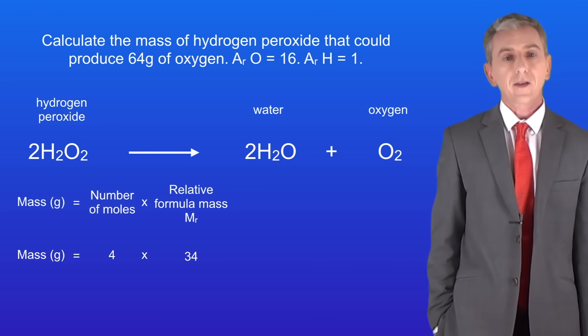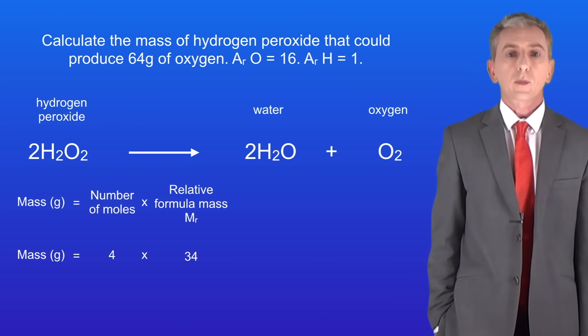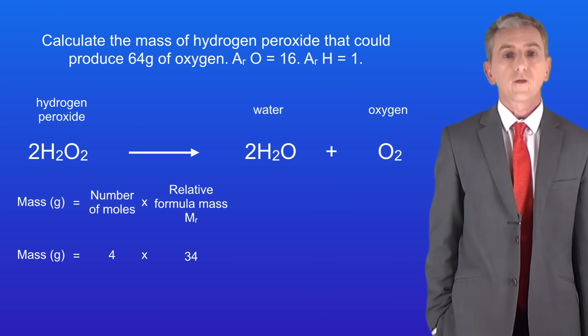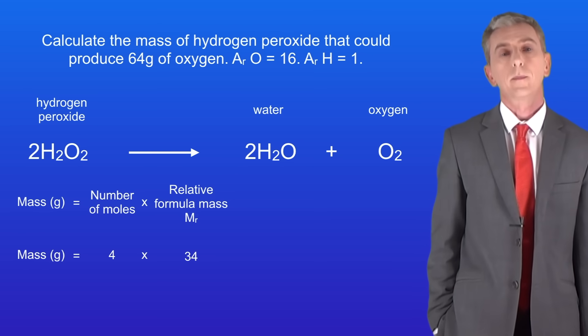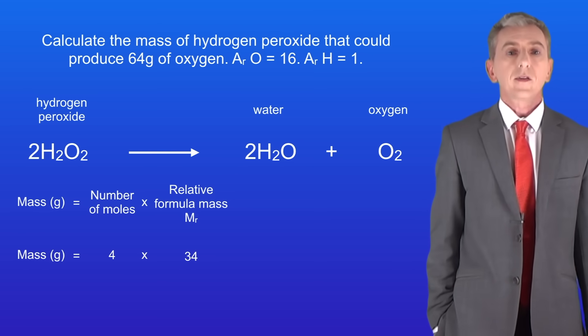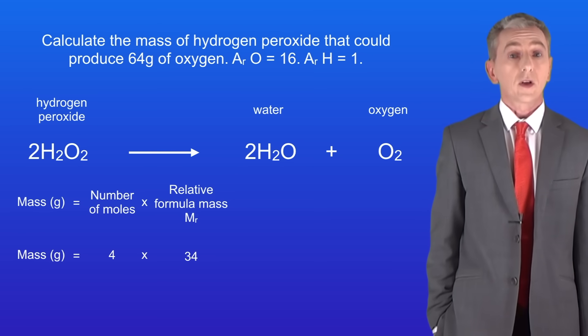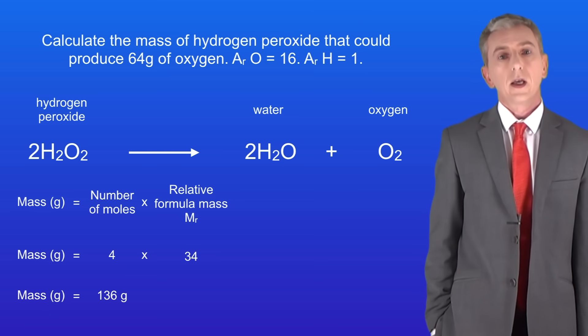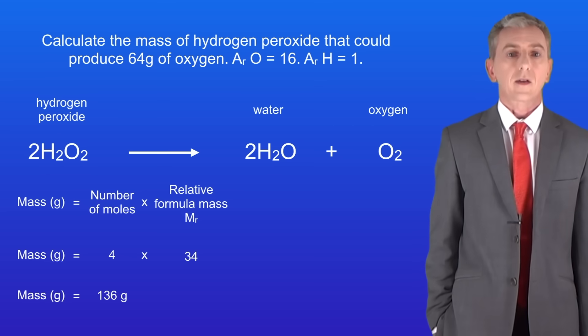To calculate the mass of hydrogen peroxide, we need to multiply the number of moles, which is 4, by the relative formula mass, which is 34. This gives us a mass of 136 grams, and that's our final answer.